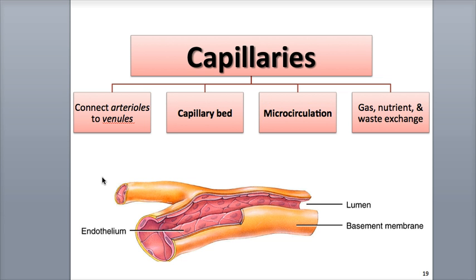The number and density of capillaries in the body's tissues increases in tissues that are metabolically very active and require more oxygen and nutrients, such as the muscles, nerves, brain, liver, and kidneys. Tissues that have lower metabolic demands, like the tendons and ligaments, don't have many capillaries. Some tissues don't have any capillaries at all, such as the epithelia that lines and covers organs, cartilage, and the cornea and lens of the eye.